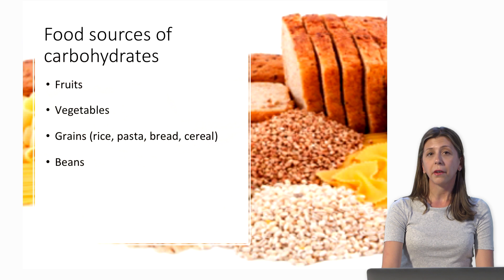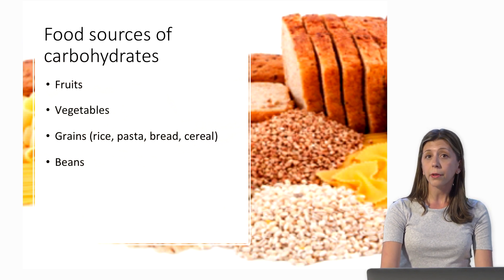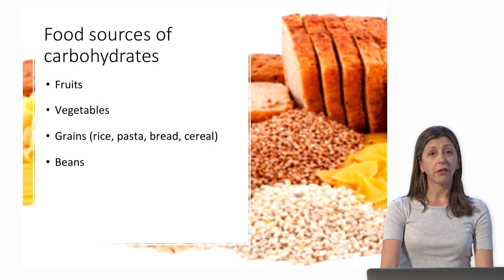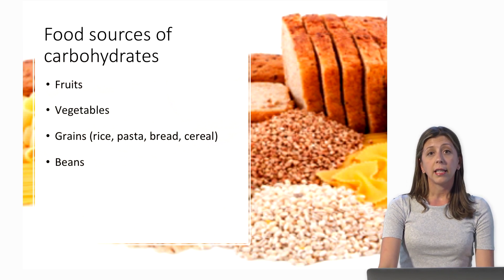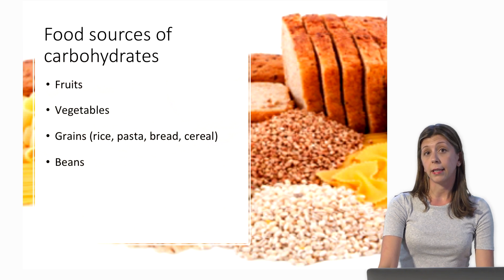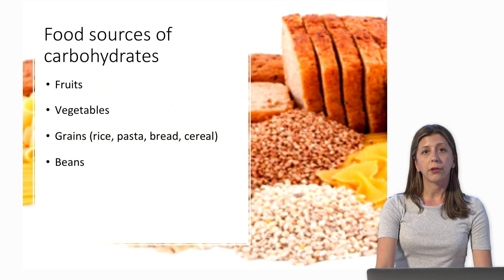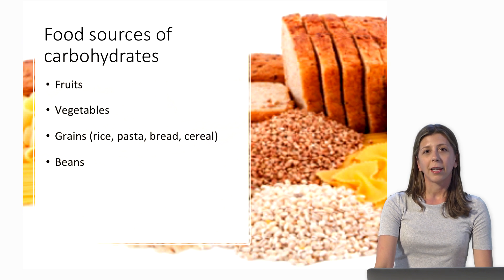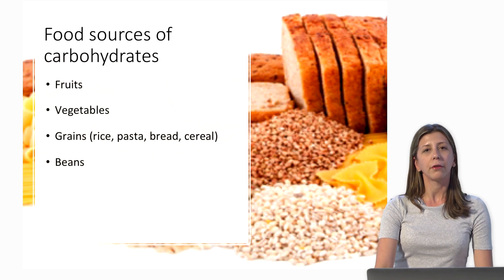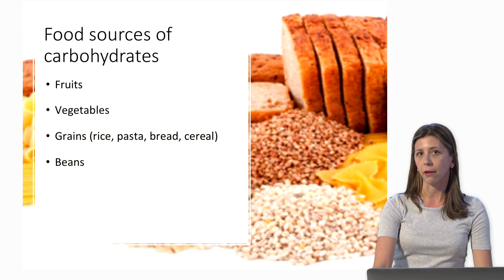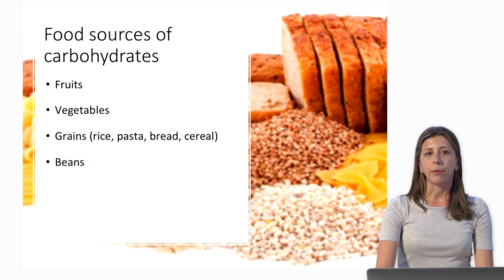What are some foods that are sources of carbohydrates? They're pretty abundant. We get carbohydrates from fruits including citrus fruits, pears, oranges, and berries; vegetables — pretty much any type; grains including rice, pasta, bread, and cereal; and beans. Beans contain carbohydrates in the form of fiber, and interestingly they also contain some protein, so they fall into a food group that contains a little bit of both. Carbohydrates are pretty abundant in our food supply.